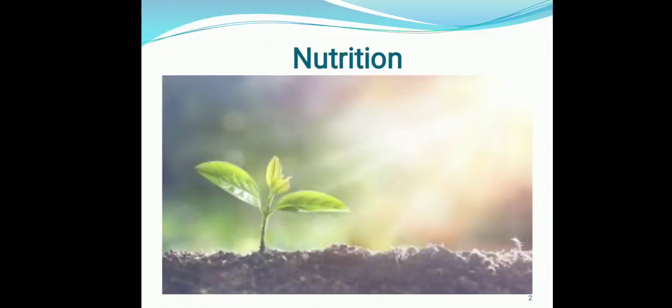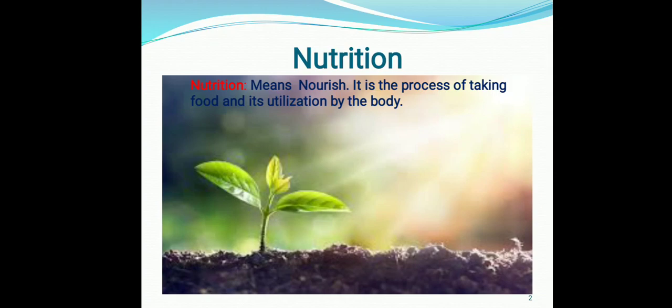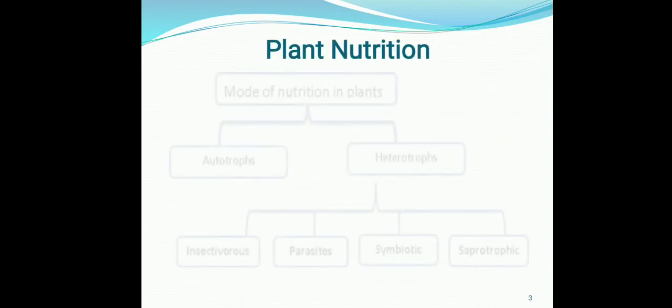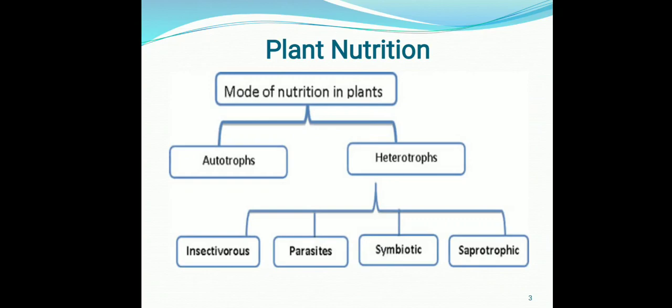Nutrition means nourishment. It is the process of taking food and its utilization by the body. In plants, there are mainly two modes of nutrition. The first one is the autotrophic mode of nutrition, which means those organisms which can prepare their own food.